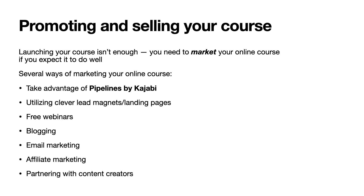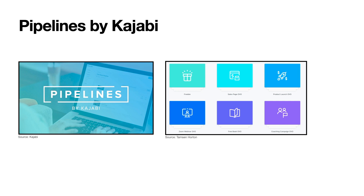Promoting and selling your course is arguably the most important section. You have to have a great course itself, but even if you do and you don't know how to promote and sell it, no one's going to buy it. You can take advantage of pipelines by Kajabi — it's built in and completely free. You can use clever lead magnets and landing pages, offer free webinars, have blogs, do email marketing to your database, do affiliate marketing, and partner with other content creators. With pipelines by Kajabi, you can have a freebie, a sales page, a product launch page, a Zoom webinar, offer a free book, and do a coaching campaign. These are all ways to get new customers through your door and into your database.